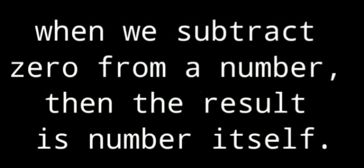Let's see the points to remember. When we subtract zero from a number, the result is the number itself. For example, three minus zero equals three. Here we draw three lines but since it's zero, we will not cut any line, so the answer is three.